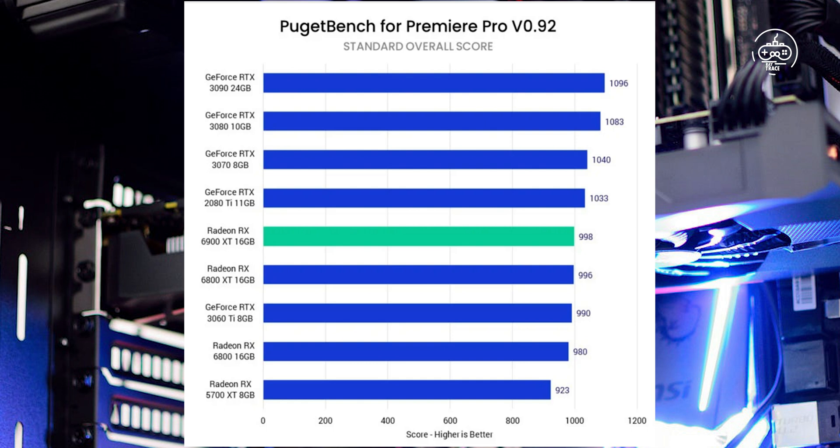Summary — VRAM requirements for video editing applications like Premiere Pro: a GPU with 4 to 8GB of VRAM. Examples: GTX 1660 Super, RTX 2060 Super, RTX 3070.